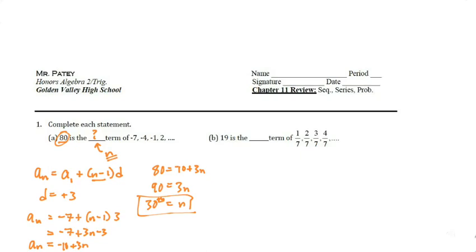Our next problem is identical except the only difference is we have a different a sub 1. Our a sub 1 on this one is 1 over 7 and we have a different common difference. What is our common difference on this one? 1 over 7. So we keep adding 1 over 7 and our first term is 1 over 7.